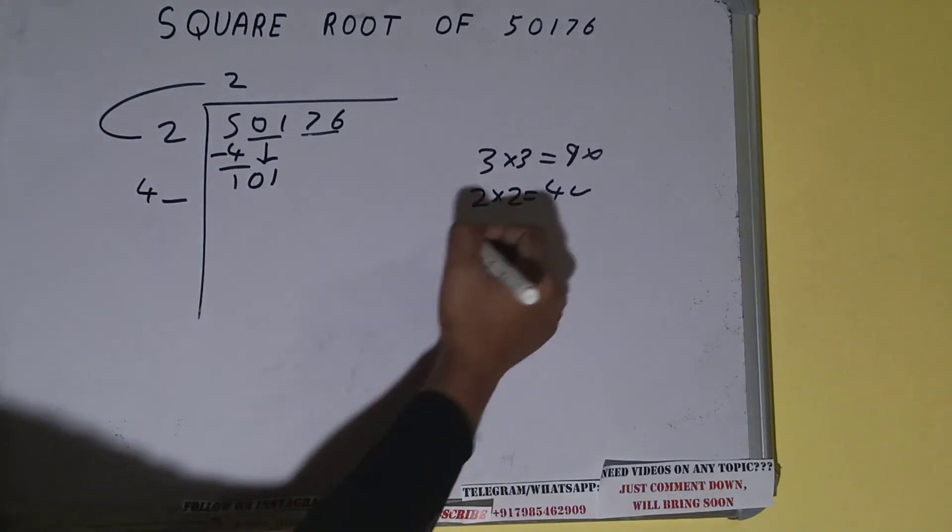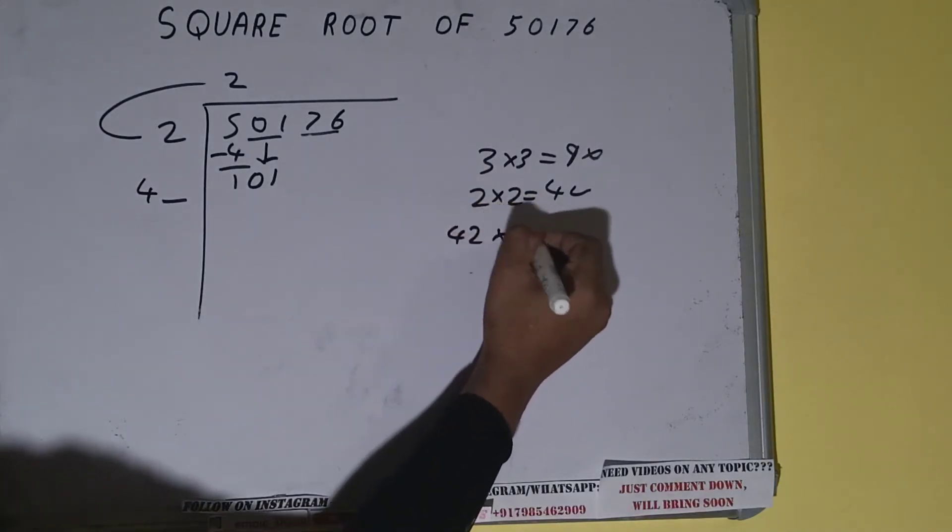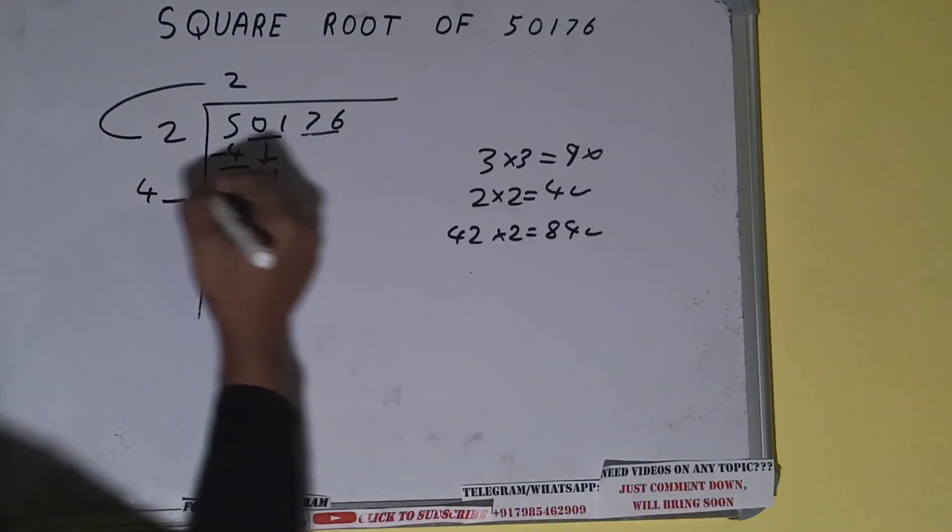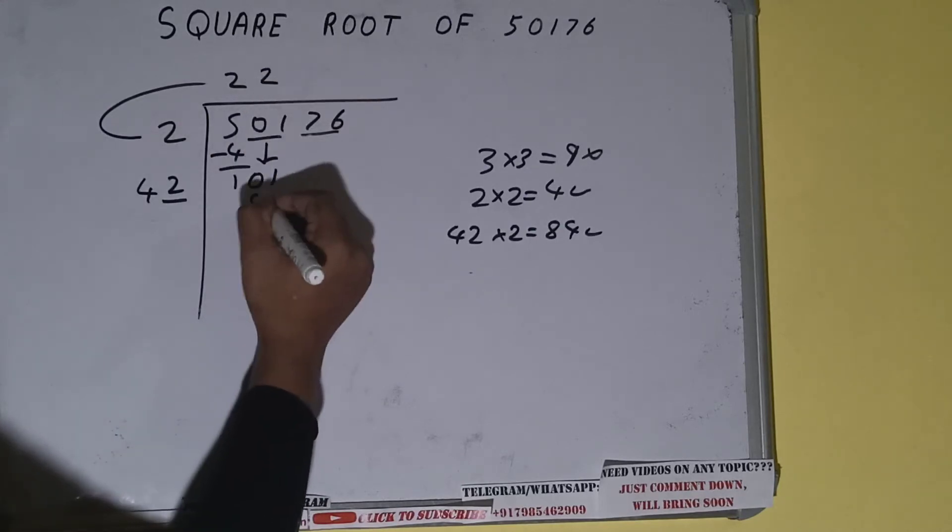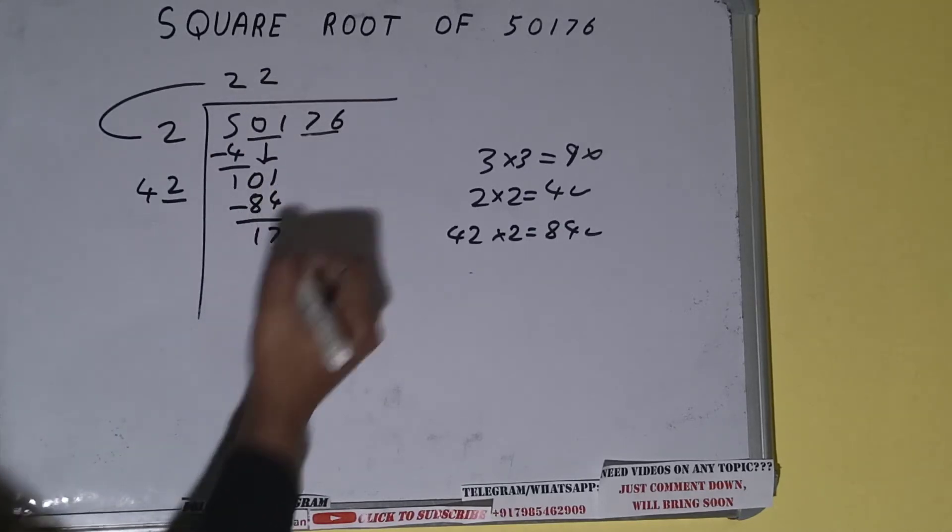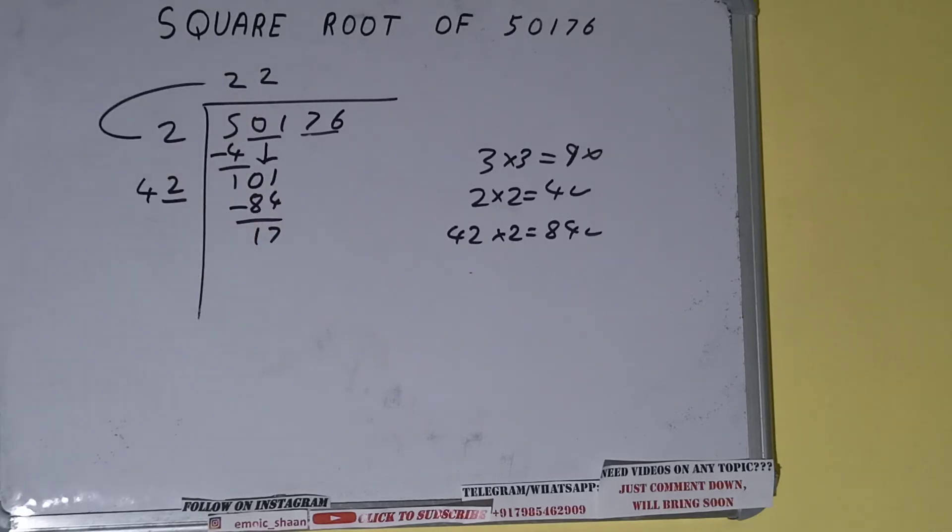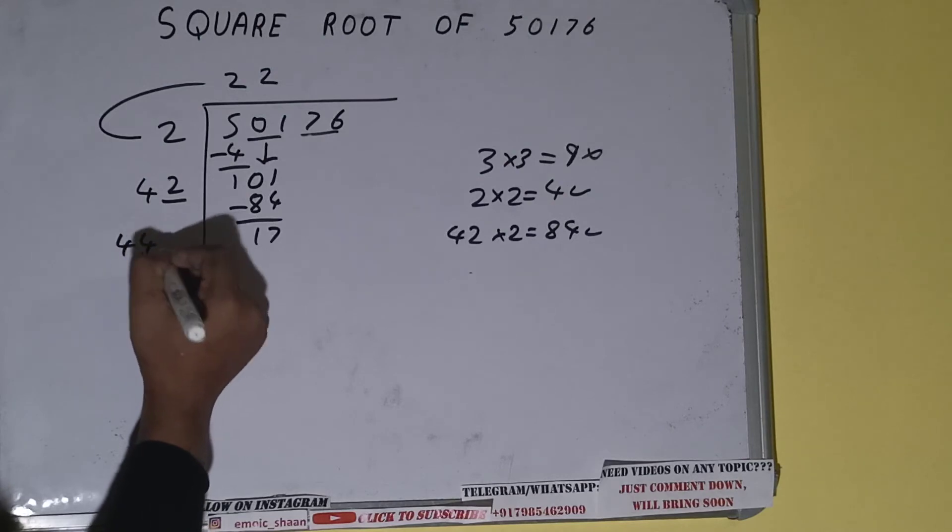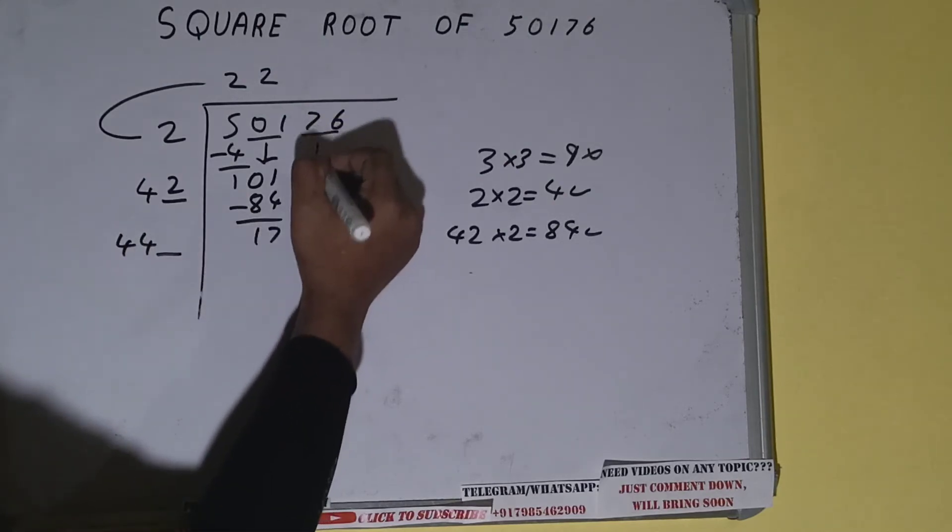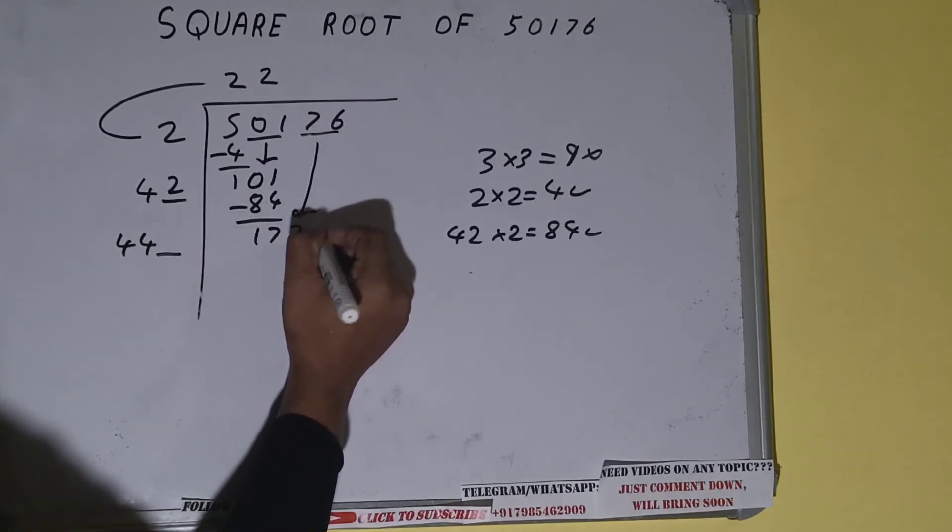So we can try 2 times, that is 42×2. It will be 84, which is good to take. So 2 here and 2 here, 84 subtract, and 17 will be left. Now 42×2, so add both: 42+2=44. Write it here and keep a digit extra. This number we need to make big, so bring the next pair down and it will become 1776.